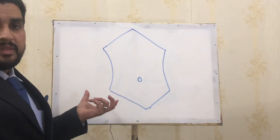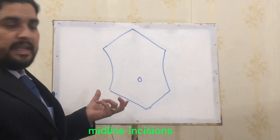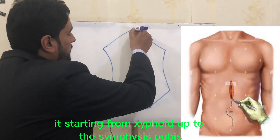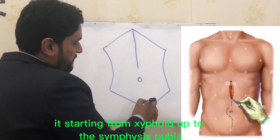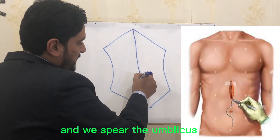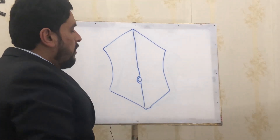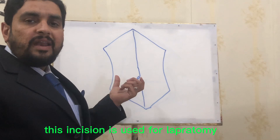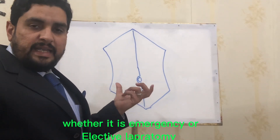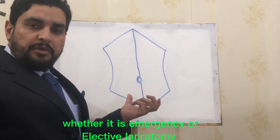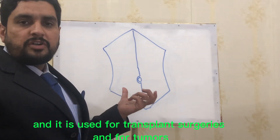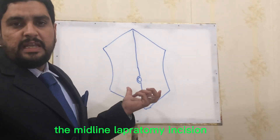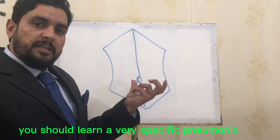Where will be the midline incision? The midline incision starts from the xiphisternum up to the symphysis pubis, and we spare the umbilicus for aesthetic purposes. This incision is used for laparotomy, whether it is emergency or elective laparotomy, and it is used for transplant surgeries and for tumors.